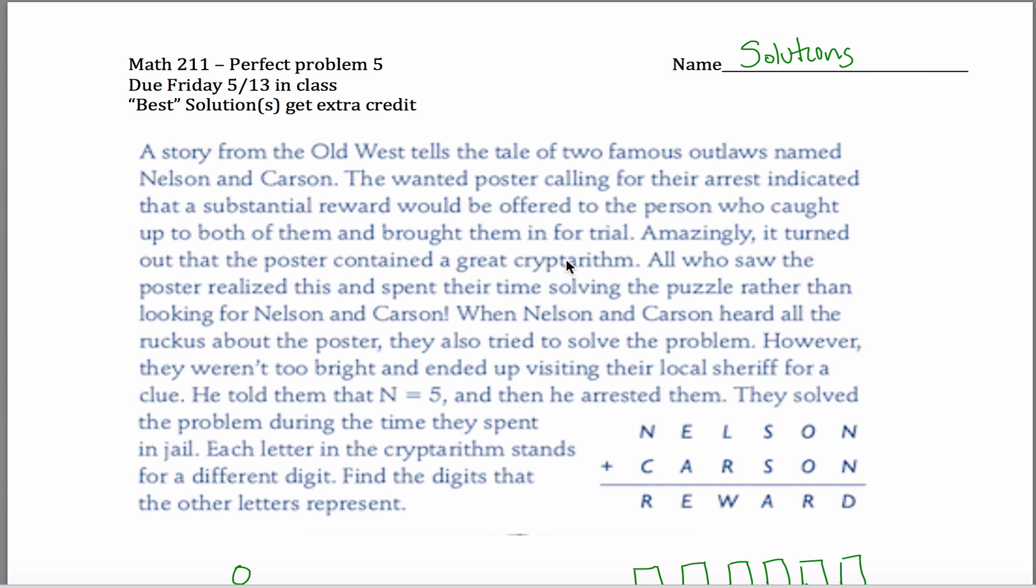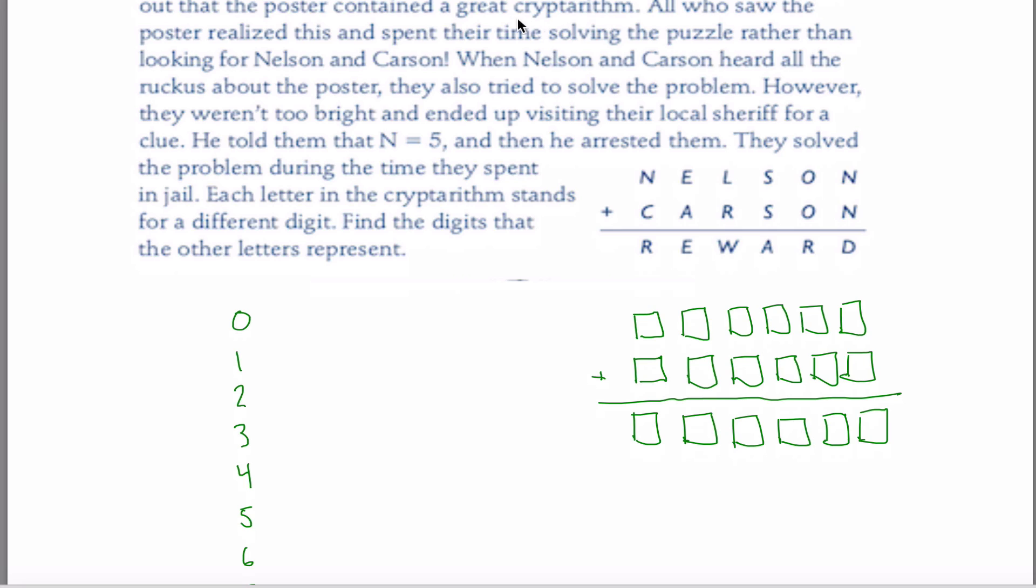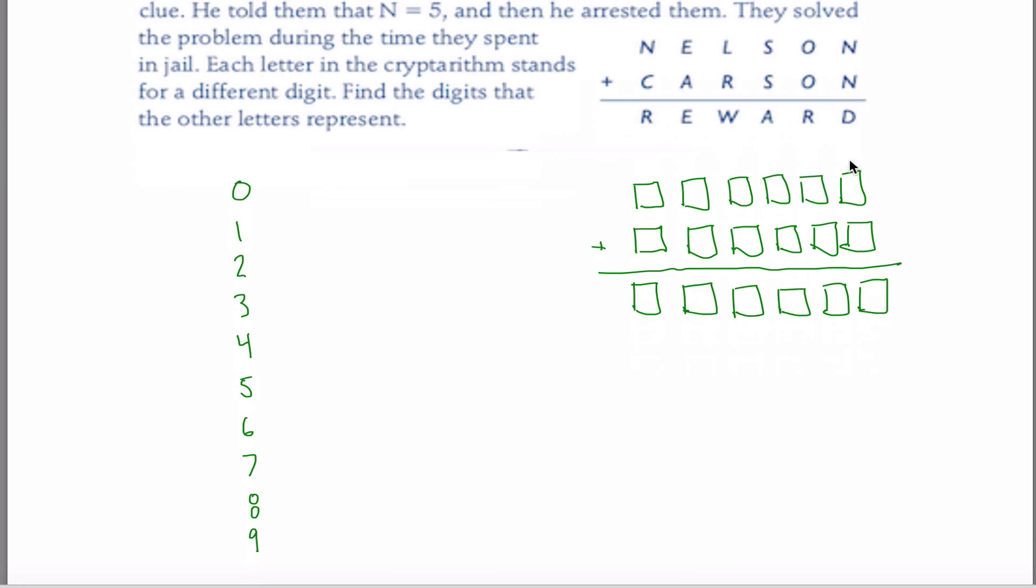Alright, here are solutions for the perfect problem 5 for Math 211. This is what's called a cryptogram, or cryptarithm I suppose, where each letter here represents a digit 0, 1, 2, 3, 4, 5, 6, 7, 8, or 9. When you make all those substitutions, you get a true statement here. I put some blanks here that I'll be able to fill in and then wrote all the digits from 0 to 9 so I can cross them out as I go.